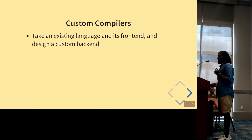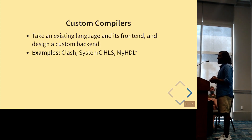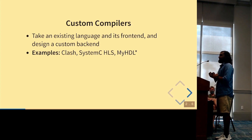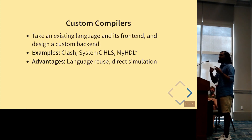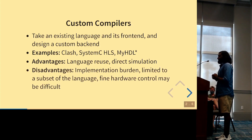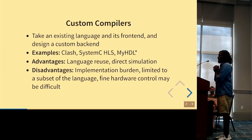The other approach is the custom compiler approach: taking an existing language and its frontend and designing a custom backend that targets hardware generation. Examples include Clash — a custom Haskell backend that generates hardware from Haskell code — SystemC HLS or C++ HLS, and MyHDL, which analyzes a Python AST and uses it as a metaprogramming layer for generating Verilog. The advantage is reusing an existing language and being able to directly simulate a circuit. However, there's a large implementation burden, you're often limited to a subset of the language, and controlling the exact hardware emitted can be very difficult.